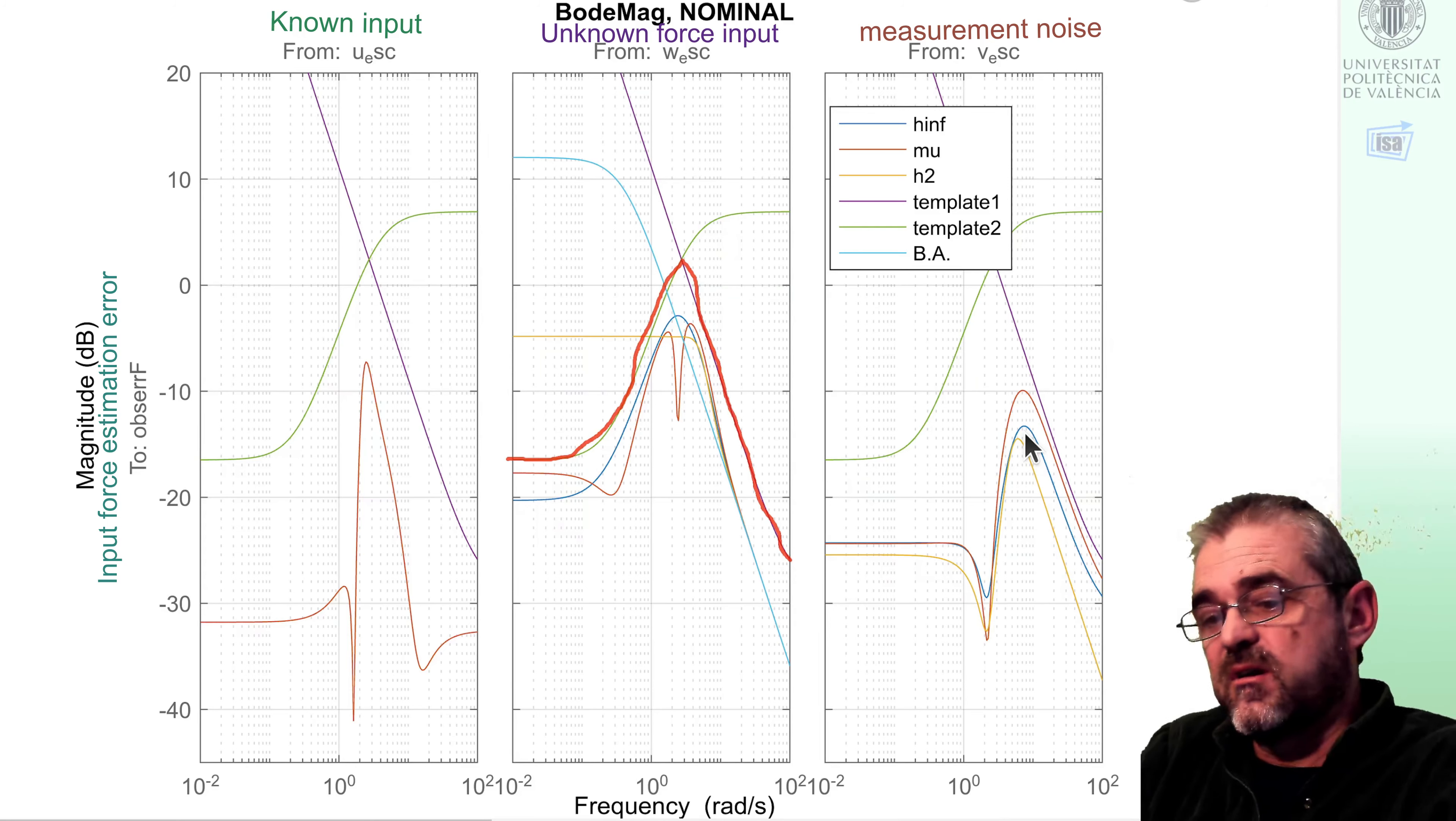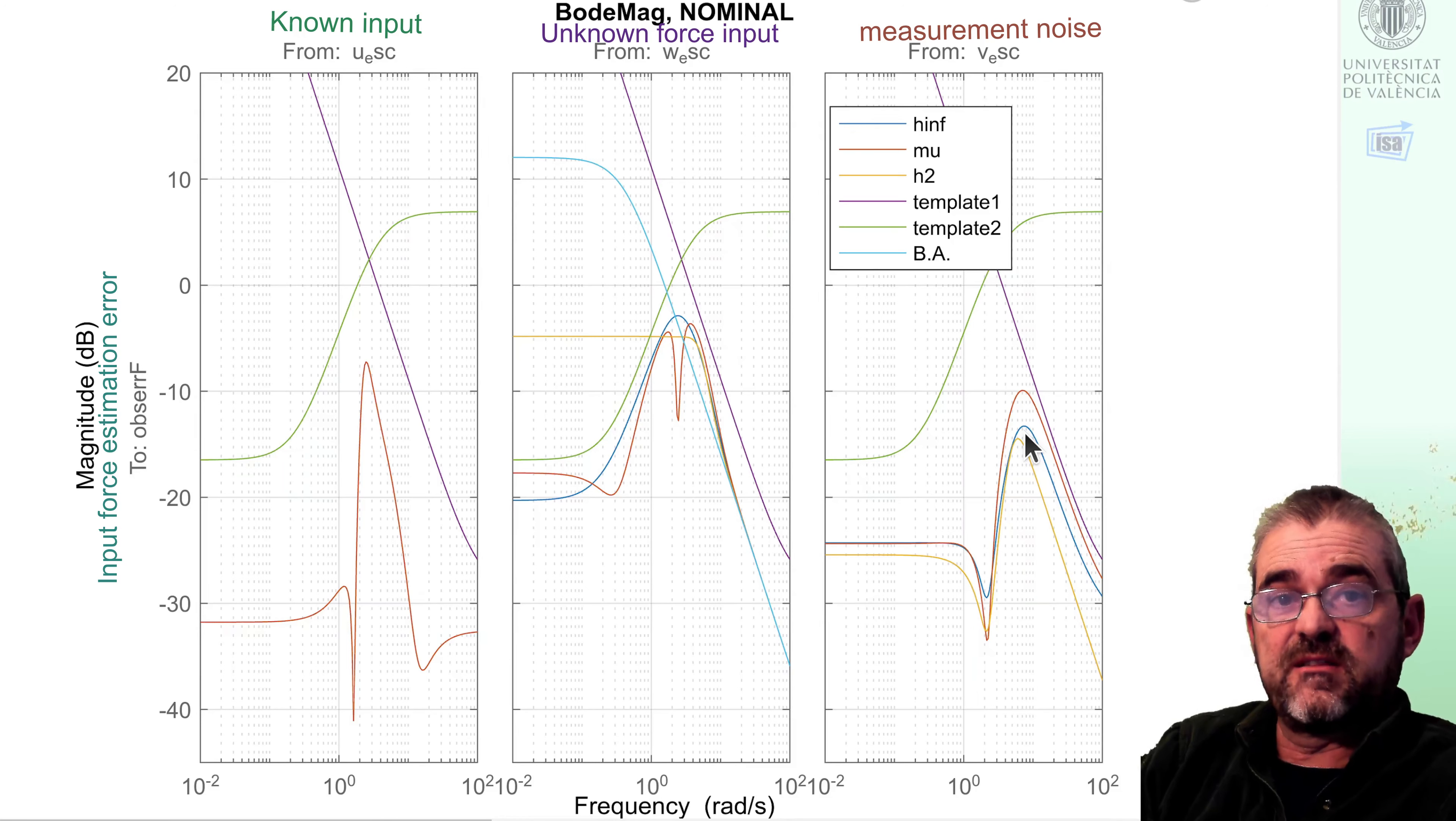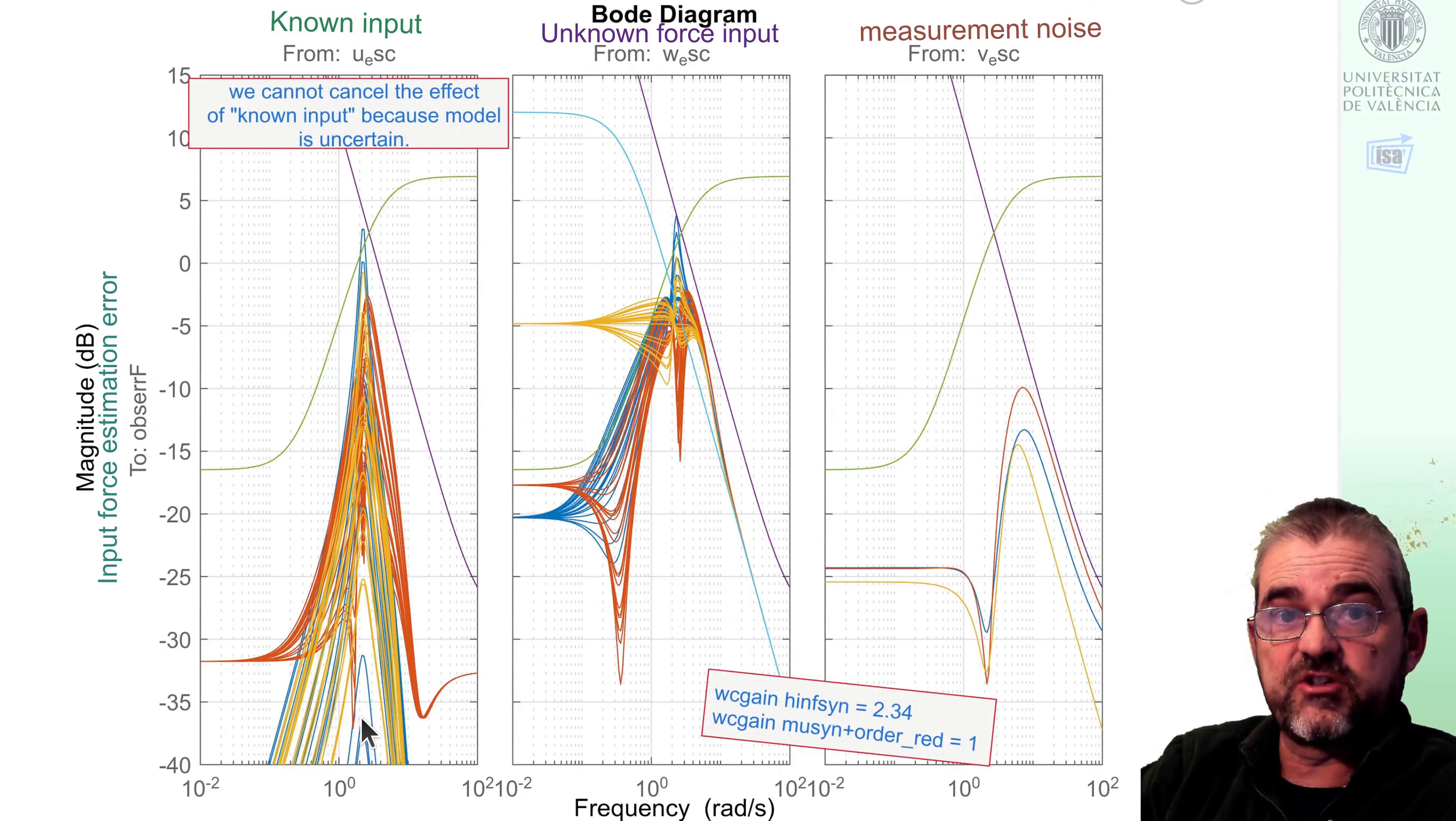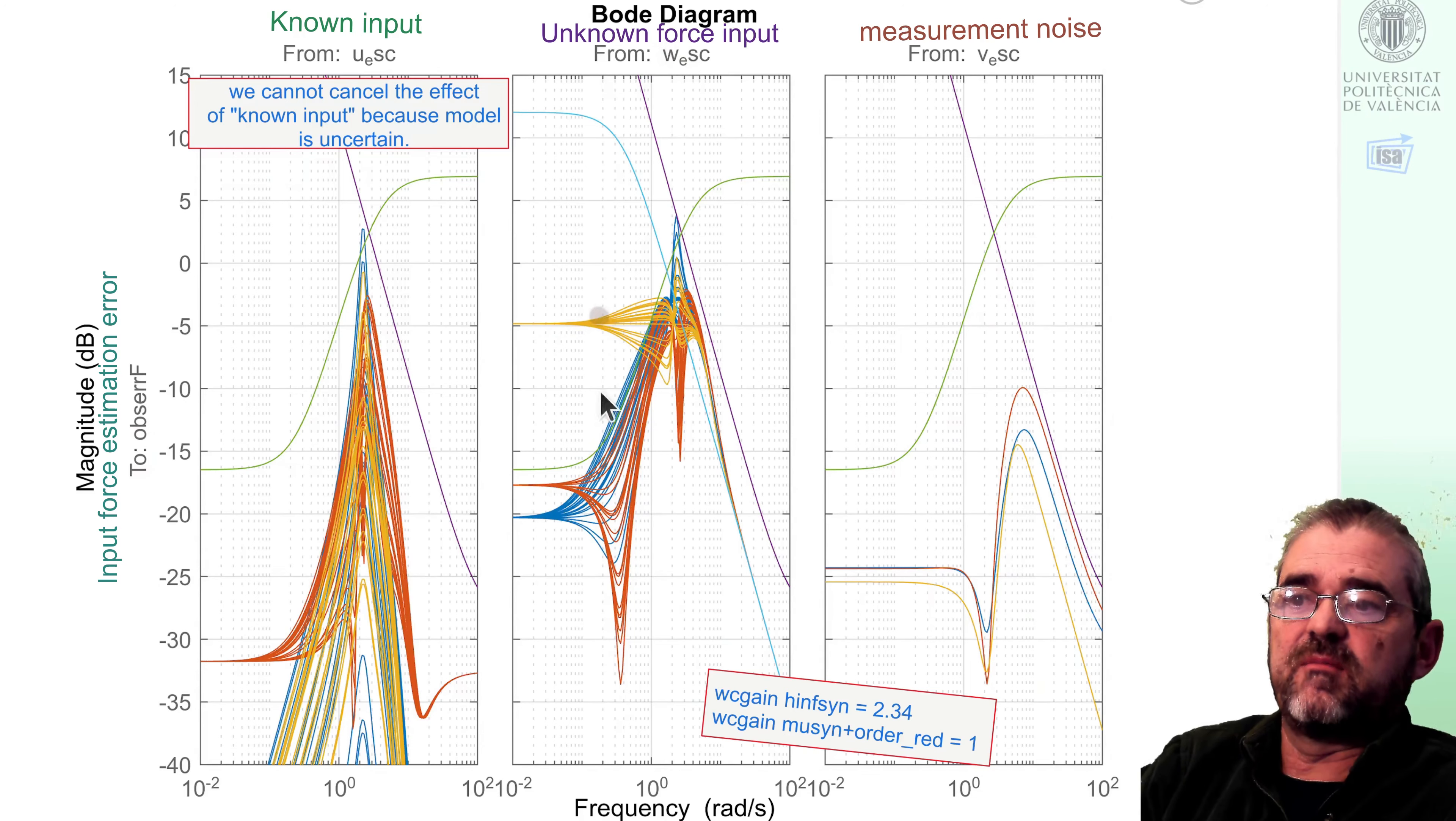This is nominal performance, and this is not what mu synthesis pursues. We will now plot the same Bode diagram, but throwing the dice, generating a handful of random plants, which is the performance under modeling error. In this case, we see on the left that the perfect cancellation of the effect of the known input is no longer possible, so H2 yellow and H infinity have a worst case effect, which is worse than that of the red mu synthesis option.